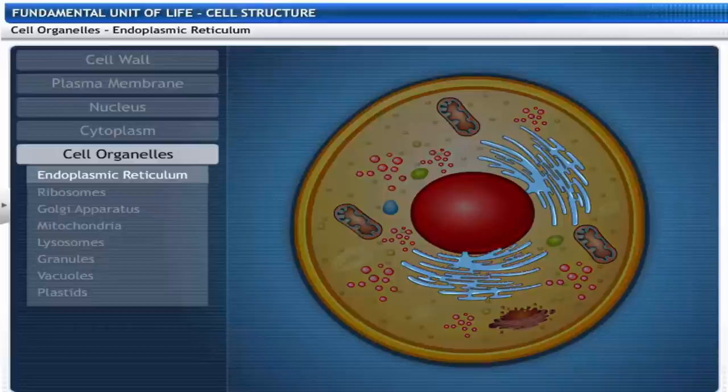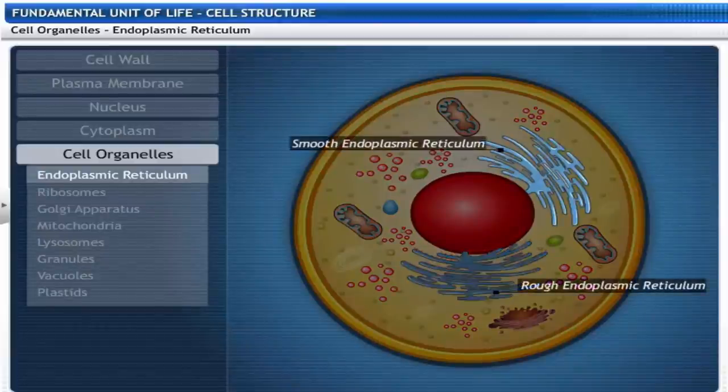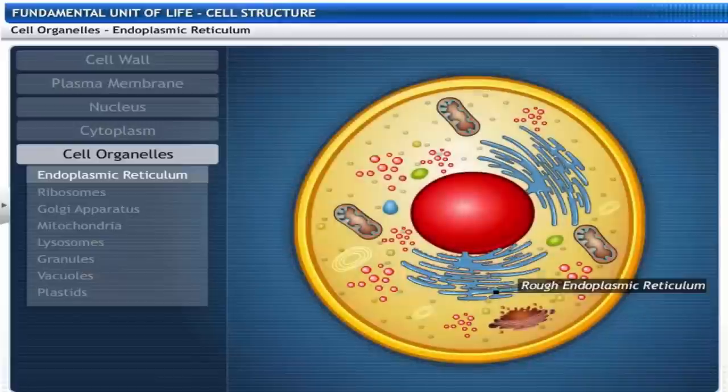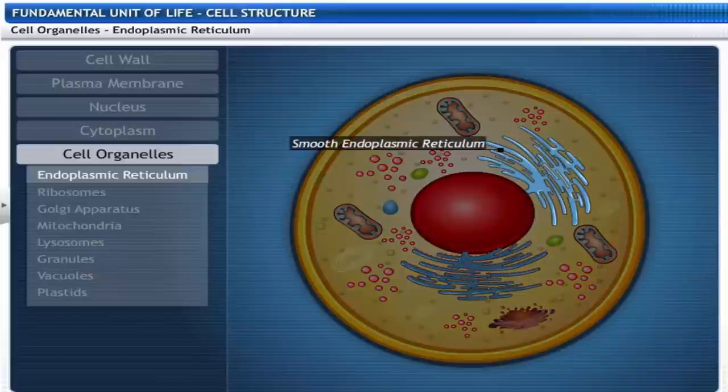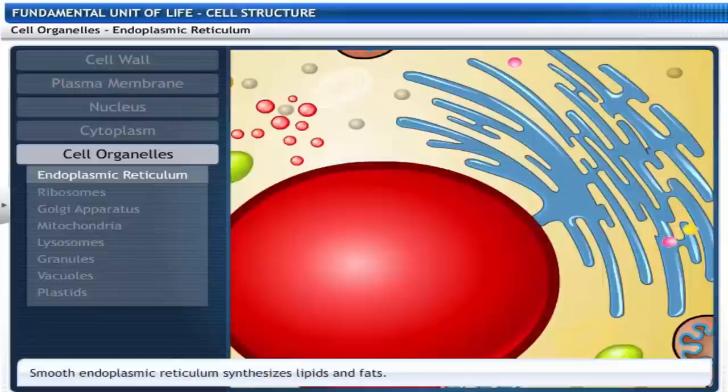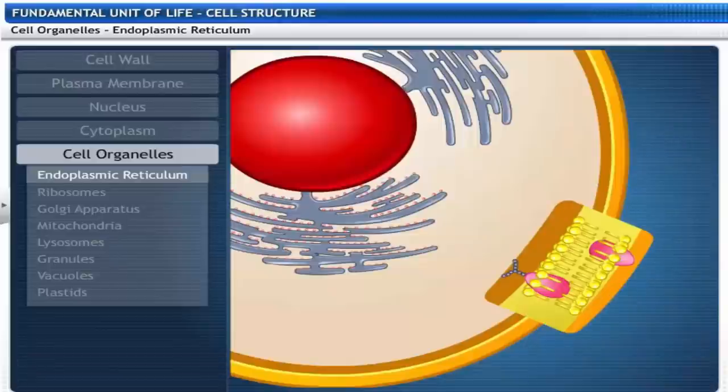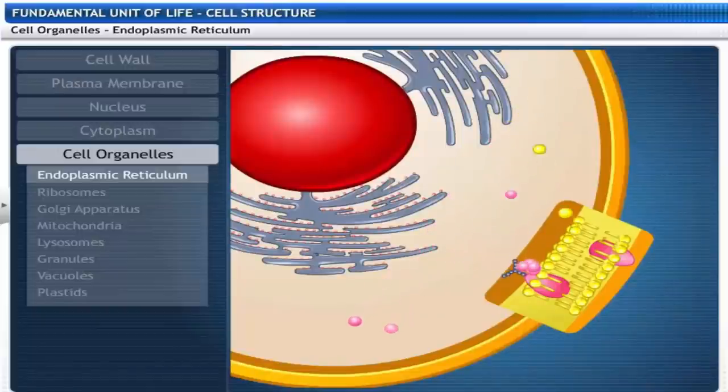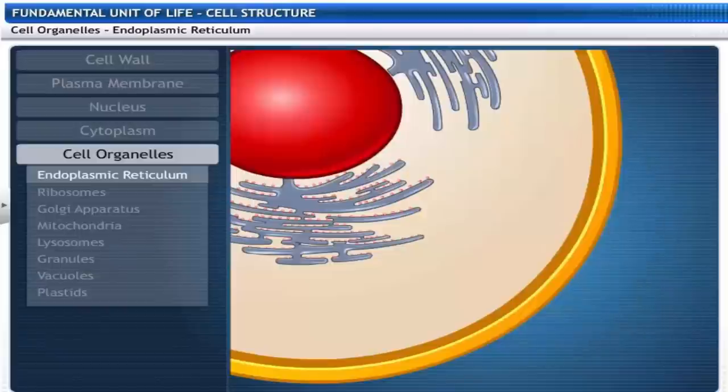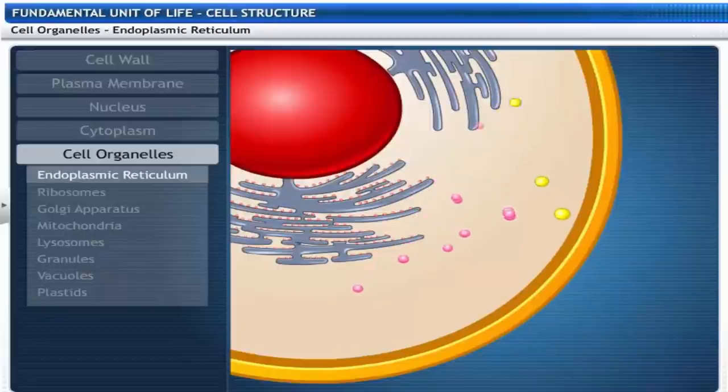There are two types of endoplasmic reticulum, rough and smooth. Rough endoplasmic reticulum has ribosomes present on it while they are absent on smooth endoplasmic reticulum. Rough endoplasmic reticulum synthesizes proteins while smooth endoplasmic reticulum synthesizes lipids and fats. Some of these proteins and lipids help in building the cell membrane and some function as enzymes and hormones. Endoplasmic reticulum serves as channels for the transport of proteins between various regions of the cytoplasm.